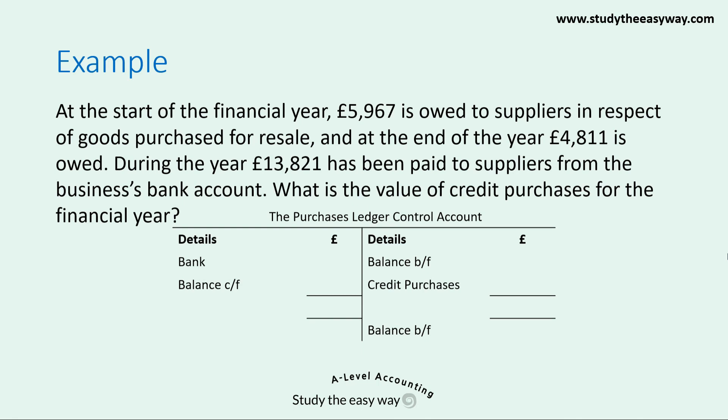The first step is to put in the information from the question: the balance at the start and end of the year, and the bank figure. The unknown figure — credit purchases — is shown with a red question mark. Once all information from the question is included, we balance the account. First, add up the items in the debit column and write down the total. This same total is shown on the credit side. We can now calculate credit purchases by taking the total, £18,632, minus the other items above the total in the credit column — in this case, just the balance brought forward of £5,967. So credit purchases have a value of £12,665.